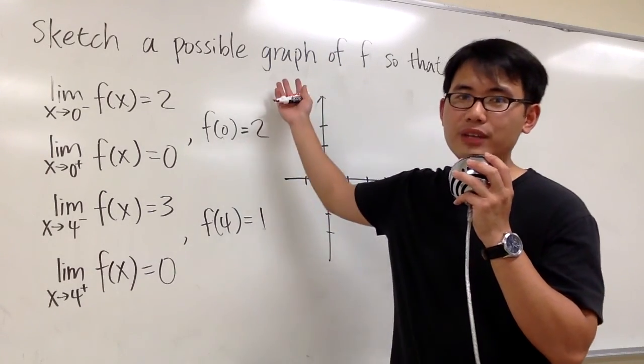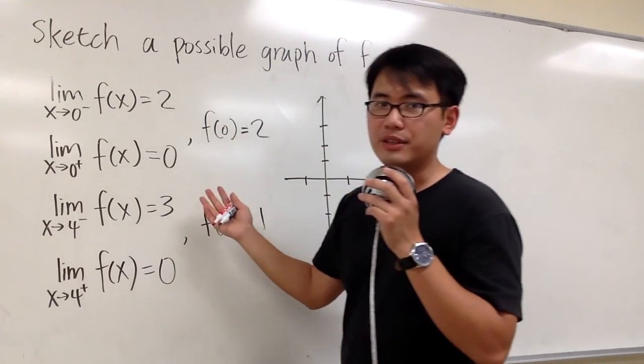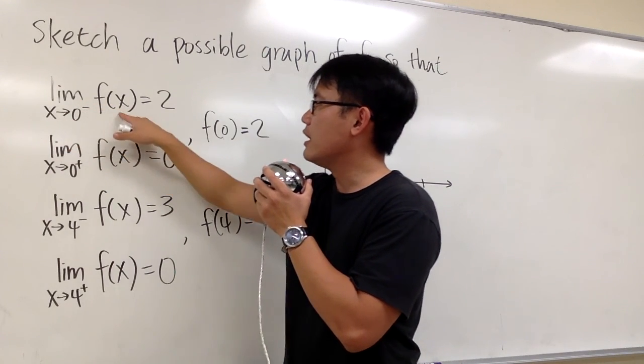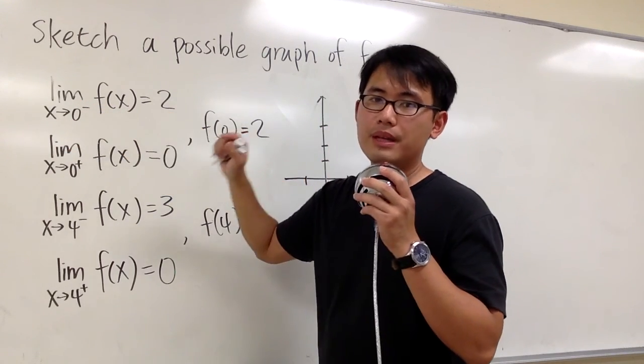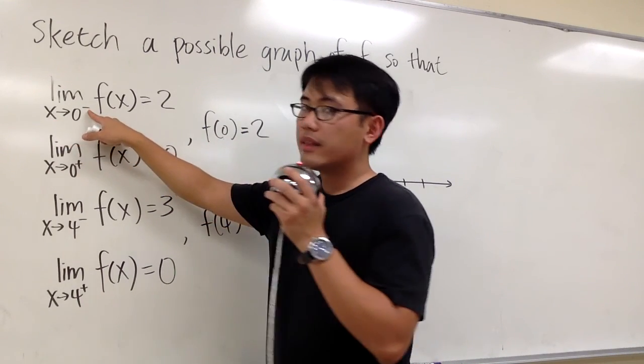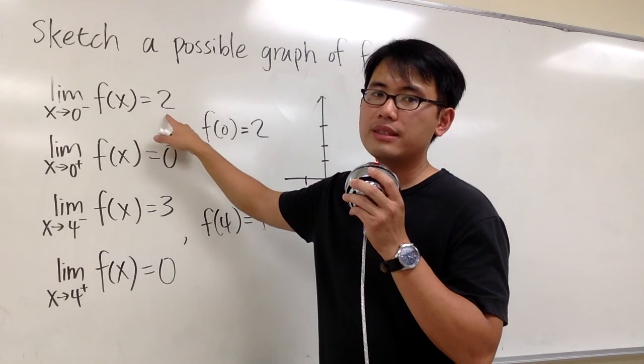We are going to sketch a possible graph for the function f so that it satisfies these six conditions. The first one says the limit as x approaching to zero negative, f of x, and we have 2. What this means is, when x is approaching to zero from the left-hand side, the y value of the function is approaching to 2.